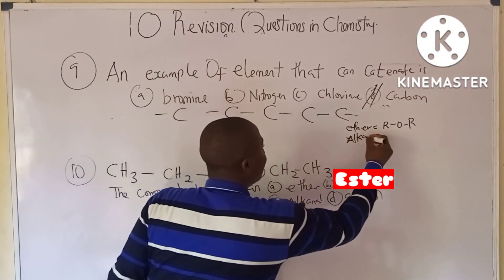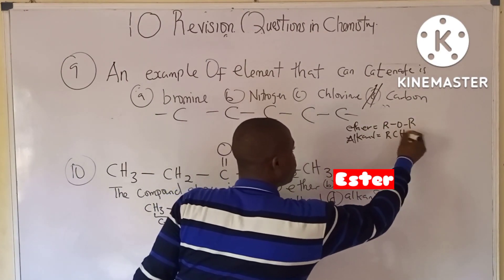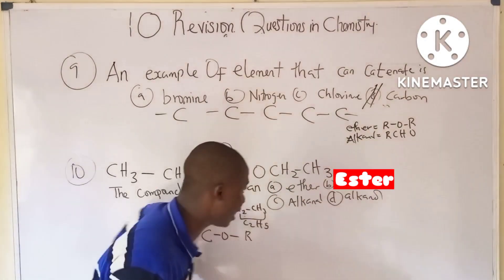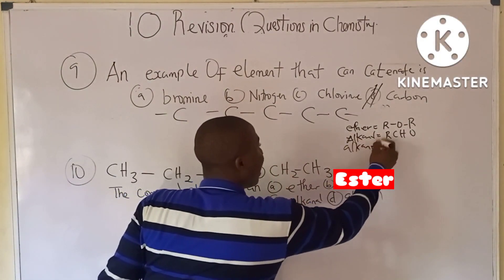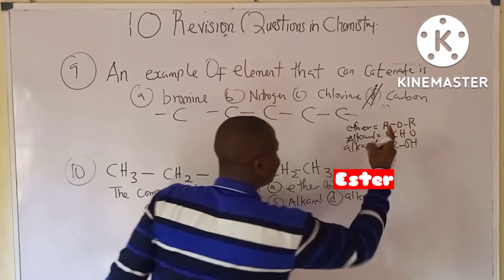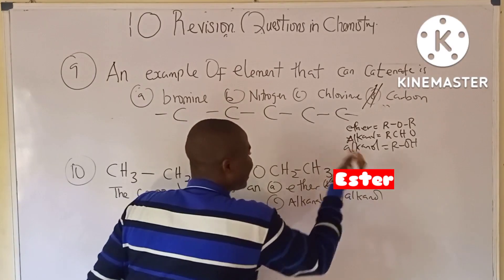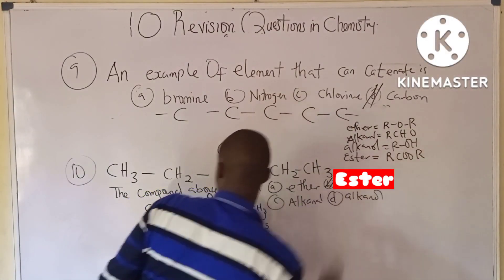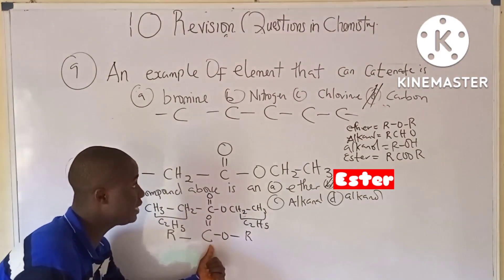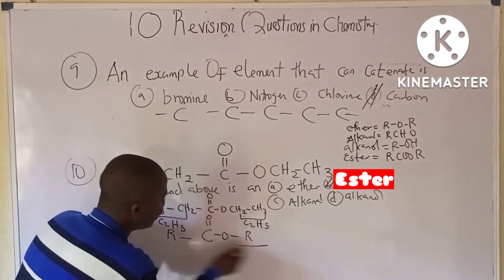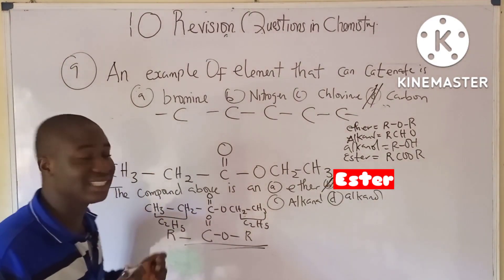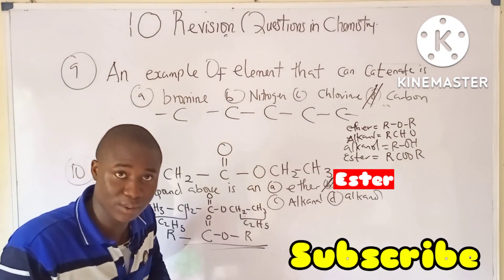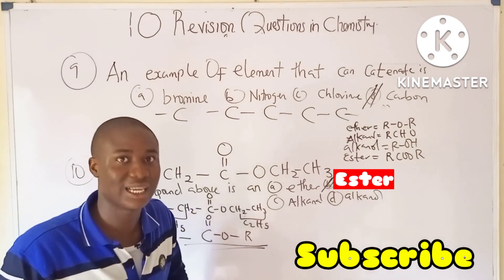Esters have the general formula R-COO-R. Looking at the compound, we have an alkyl group, C, two oxygens (C=O and O), and another alkyl group — this matches the ester formula R-COO-R. So the answer is ester. If you found this video helpful, please click the subscribe button and share with your friends. Thanks for watching.